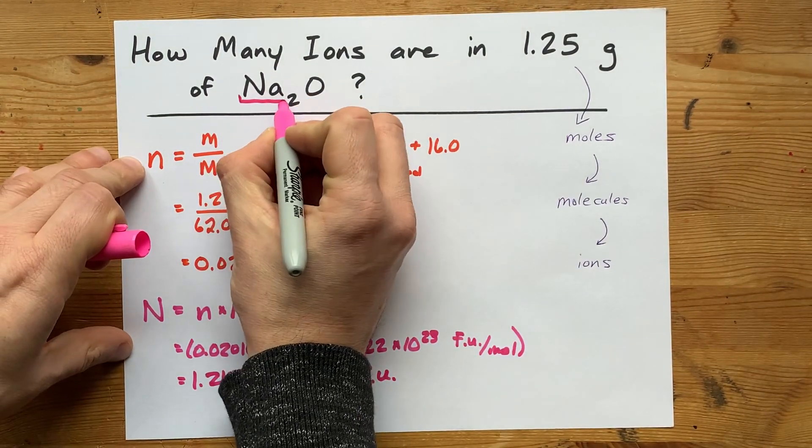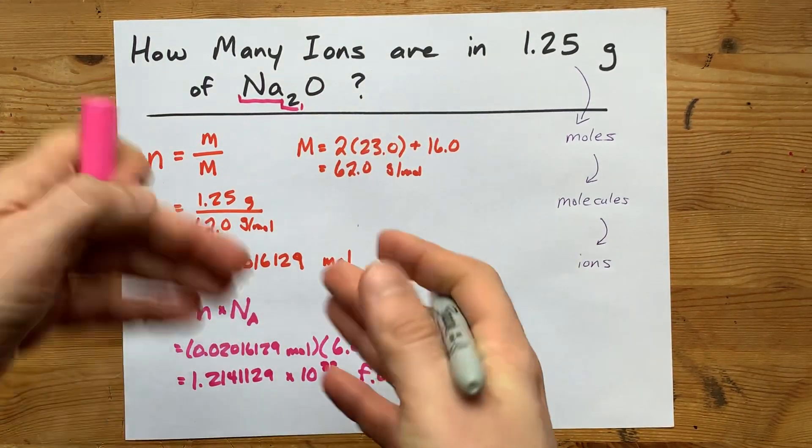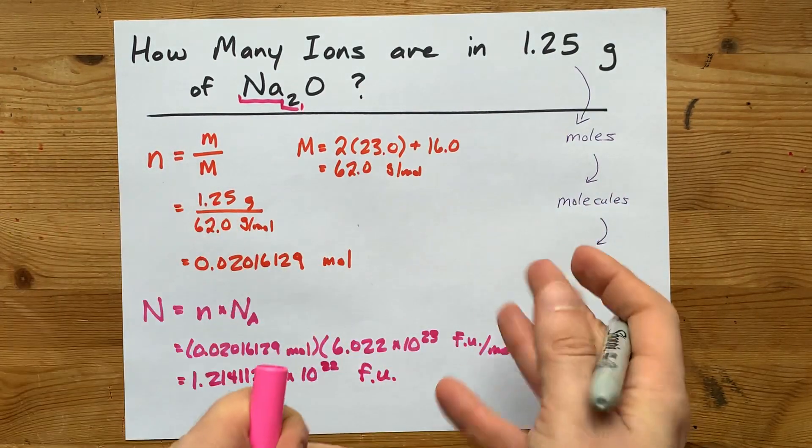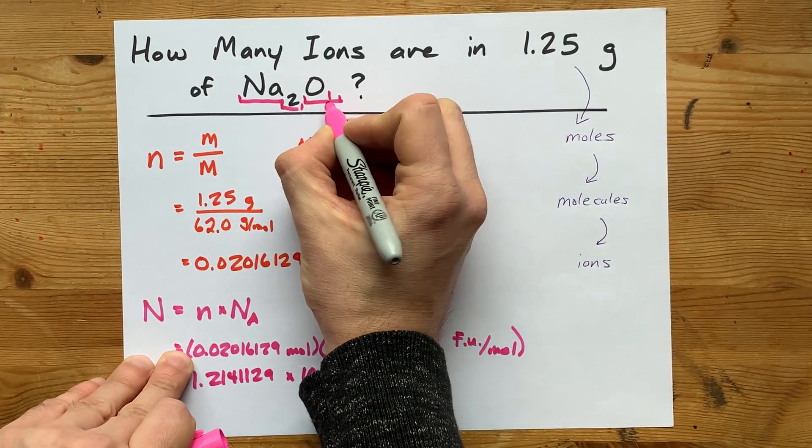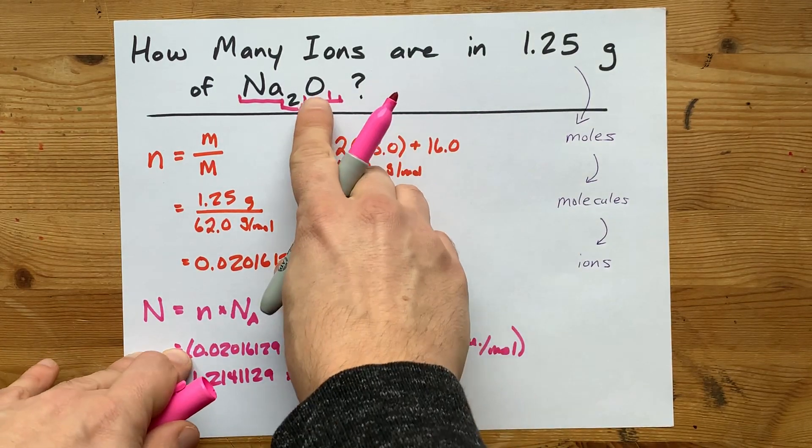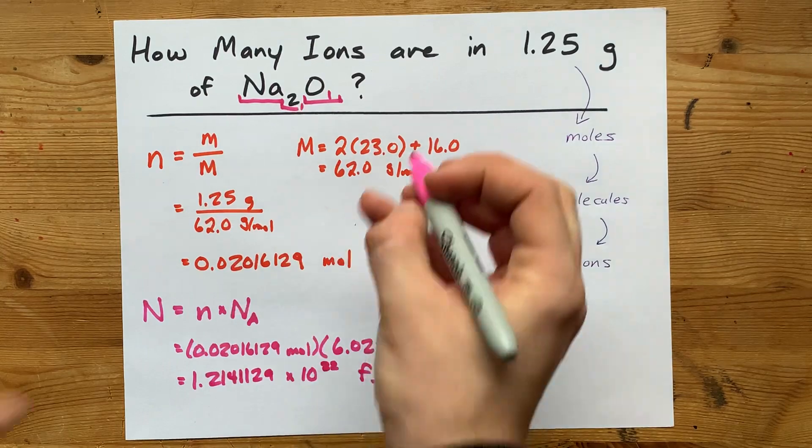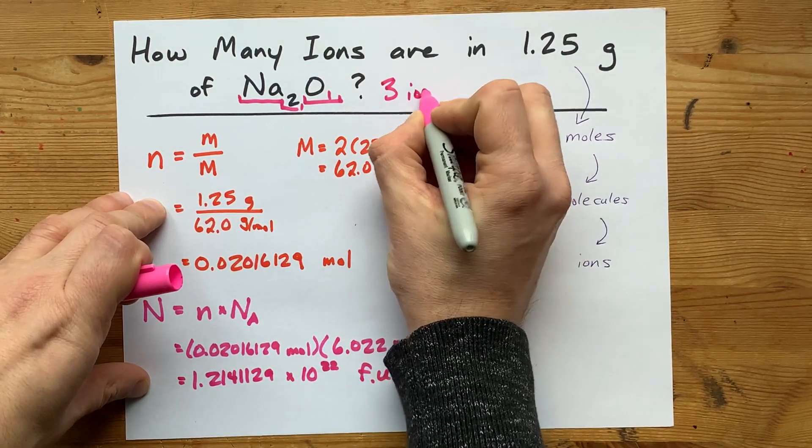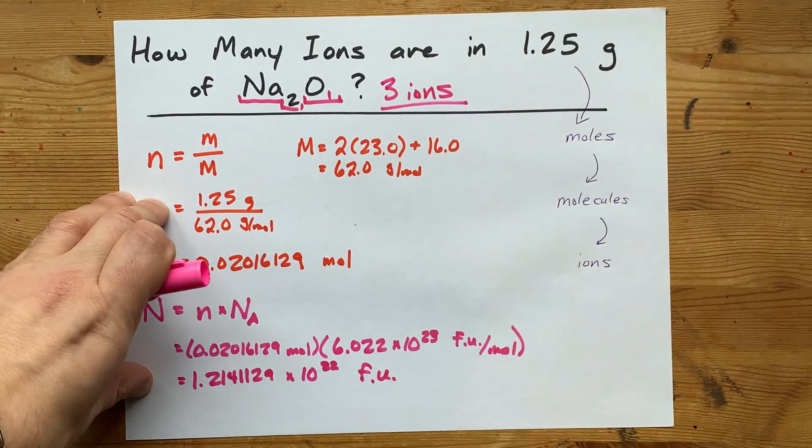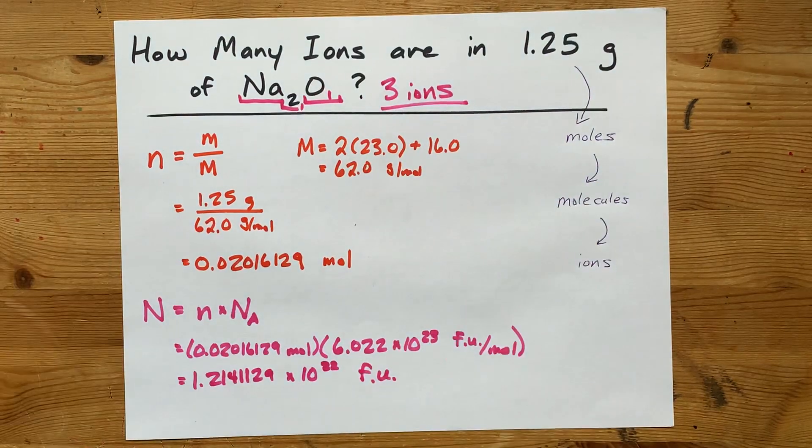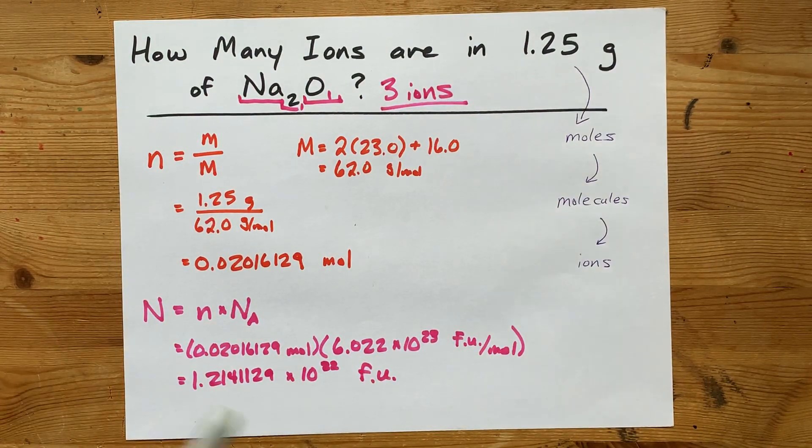Well, the Na2 here represents two sodium ions. And the O-1, we don't write the 1, but there is one hidden there, is one oxide ion. This particle has three ions in each one of them.